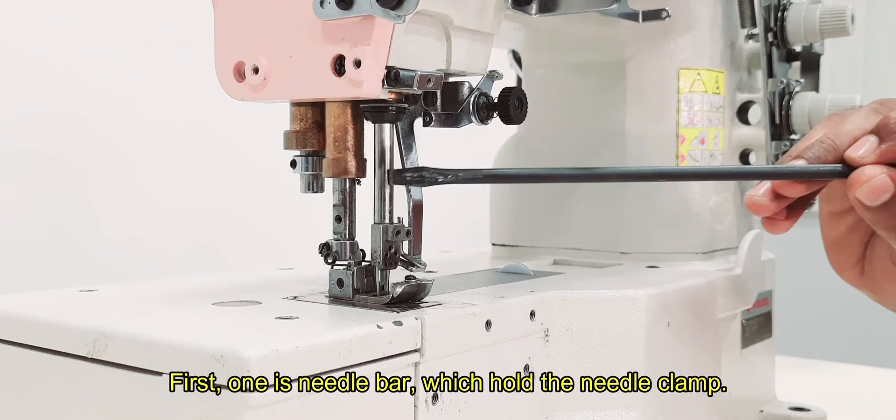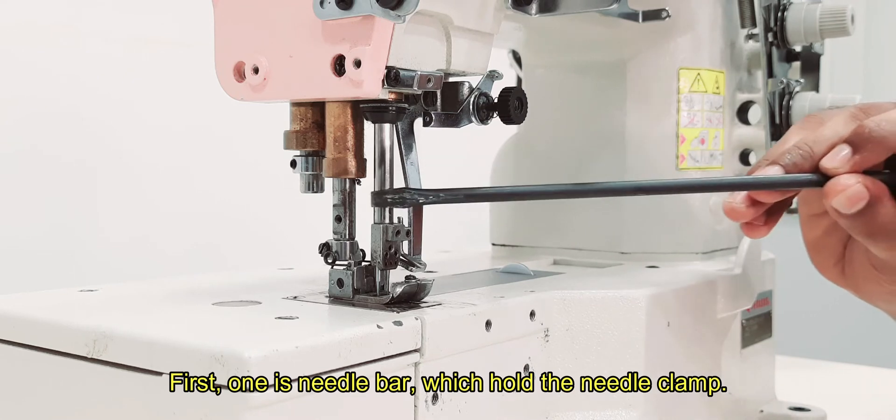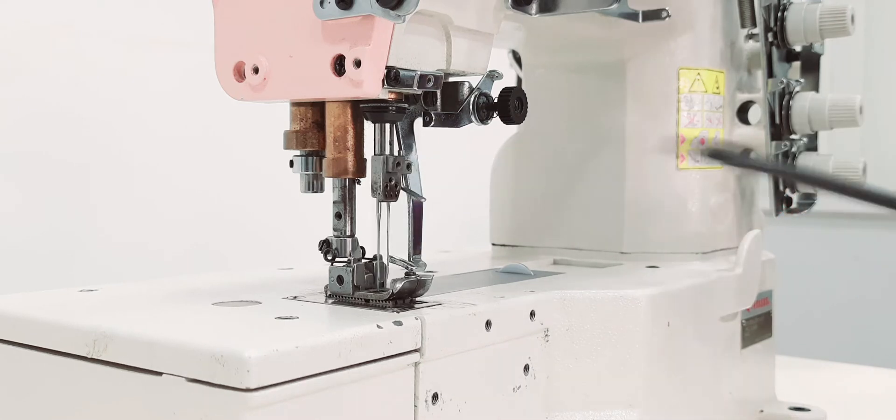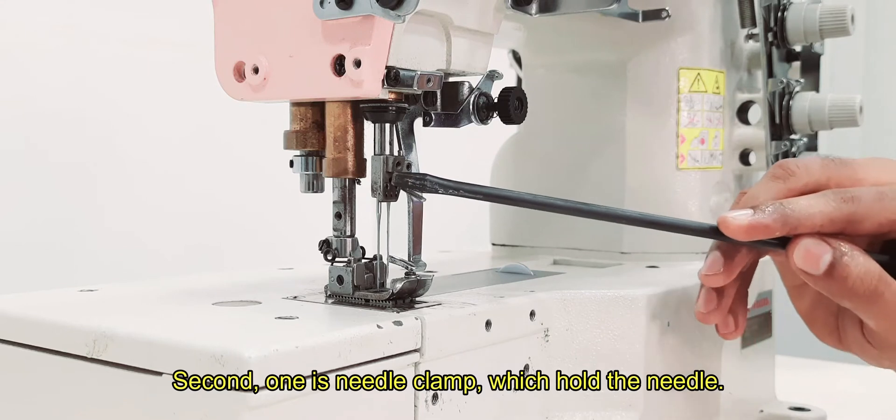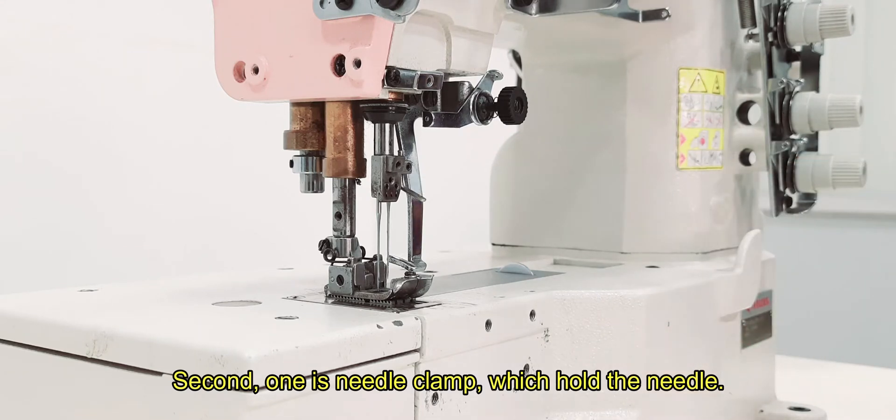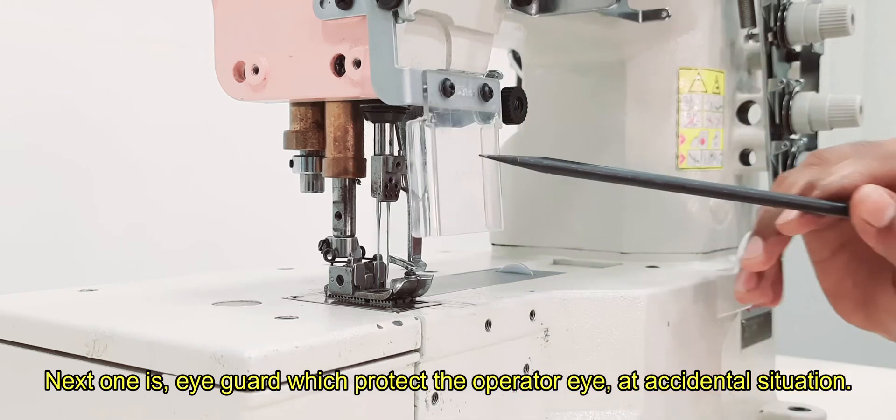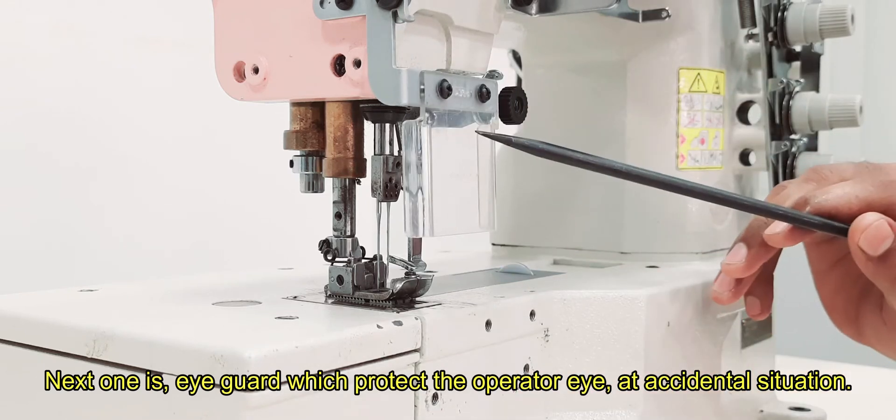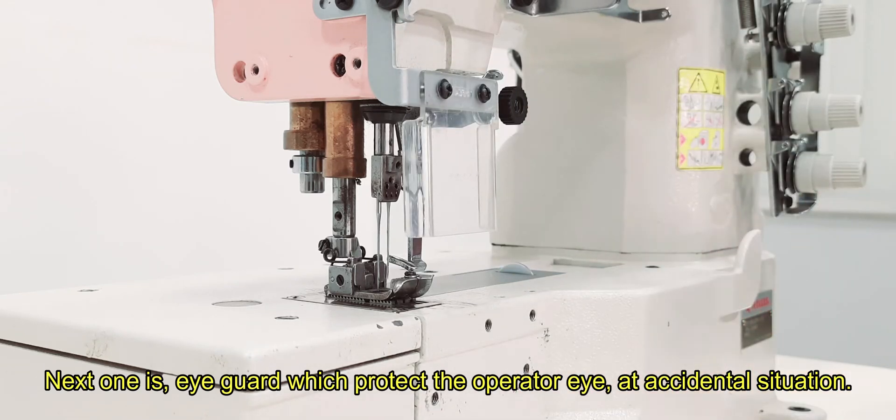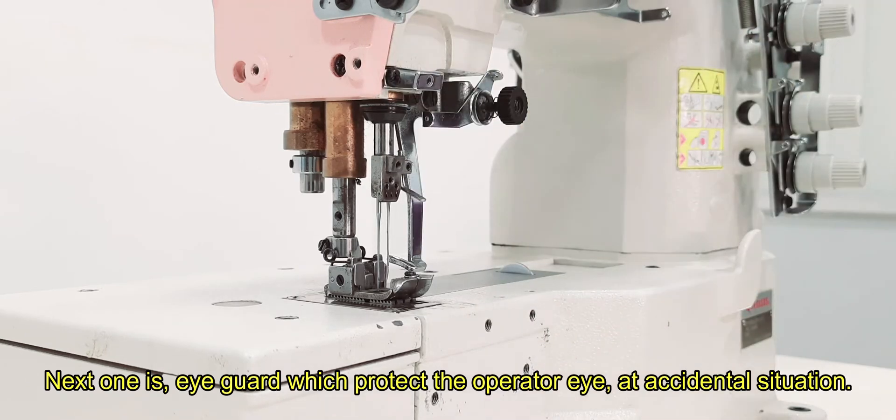First one is needle bar, which holds the needle clamp. Second one is needle clamp, which holds the needle. Next one is eye guard, which protects the operator's eye at accidental situation.